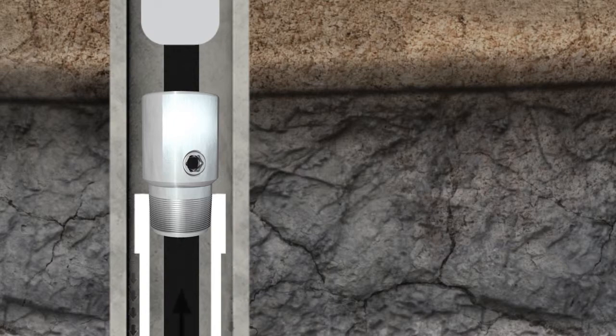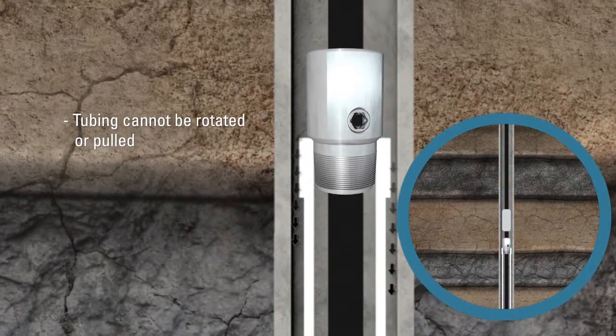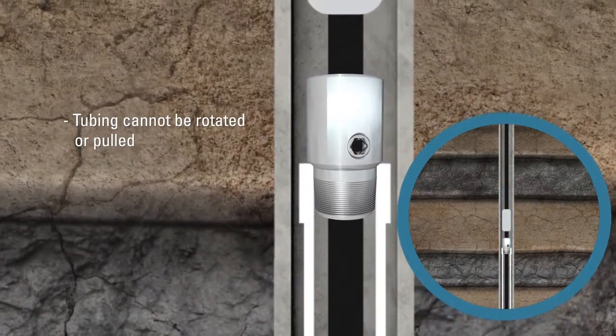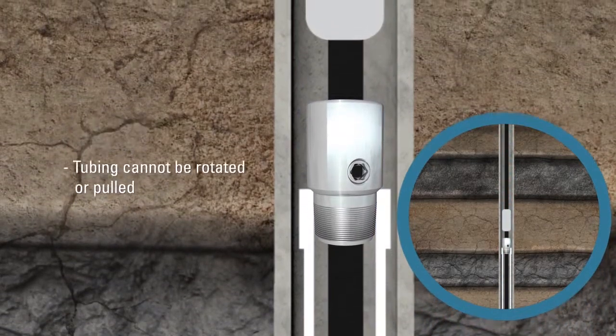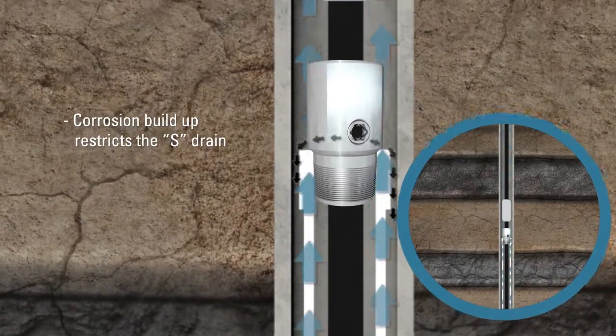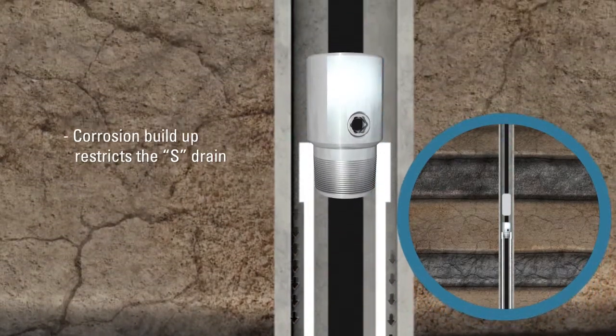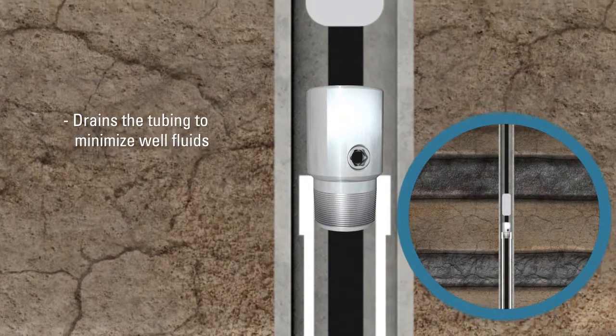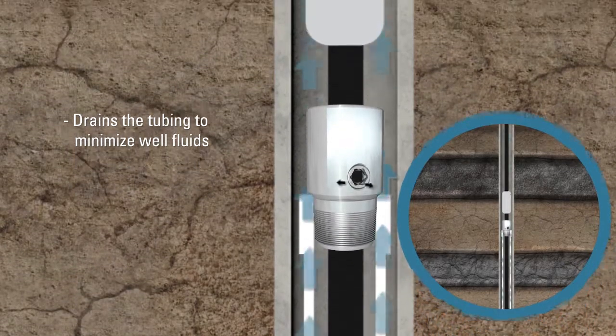When tubing cannot be rotated or pulled to actuate mechanical draining devices, where corrosion buildup restricts the S-drain from operating properly, drains the tubing to minimize well fluids around the work zone.